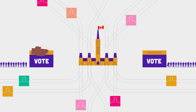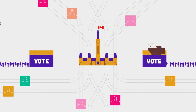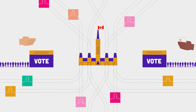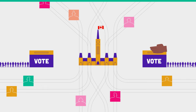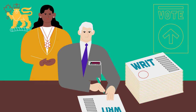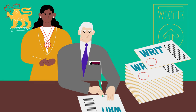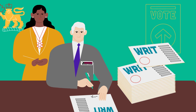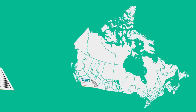So, how does the election process work? On the request of the Prime Minister, the Governor-General ends Parliament and directs that the writs of election be issued. This means that a federal election is called.